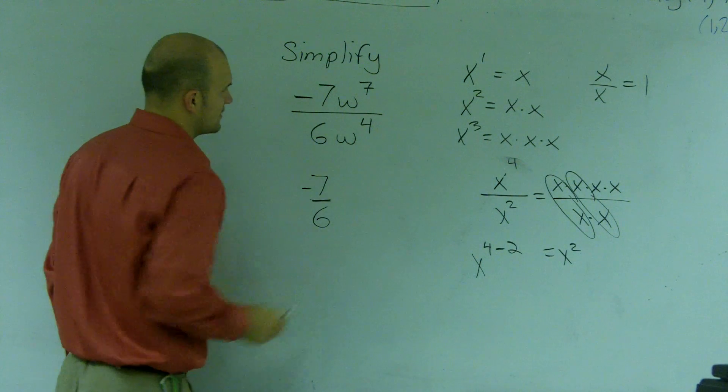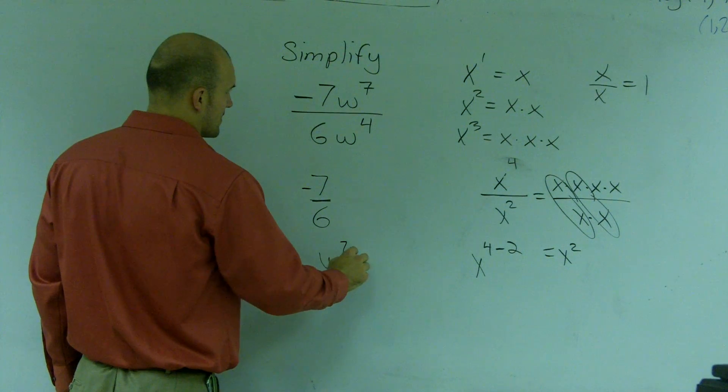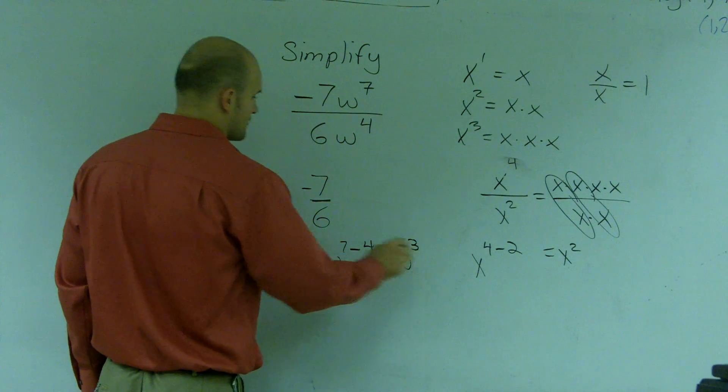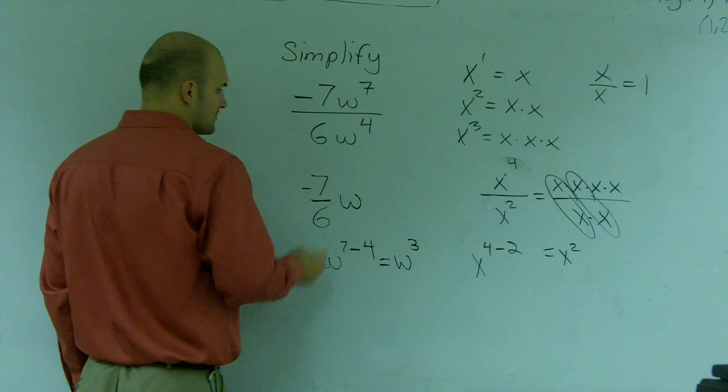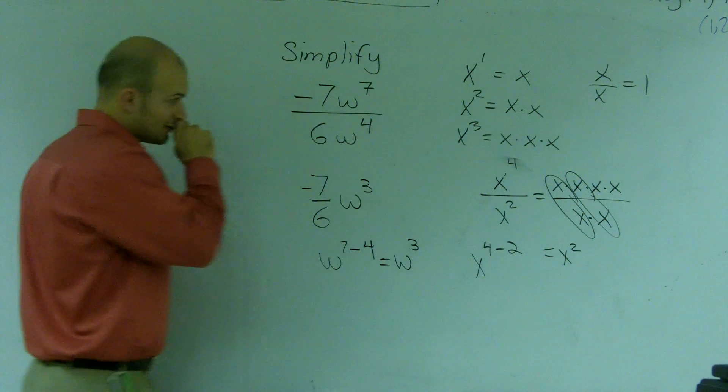You just have w to the 7th minus 4. So you just subtract the exponents whenever you divide, and what you get is w to the 3rd. So my final answer is negative 7 divided by 6 times w to the 3rd.